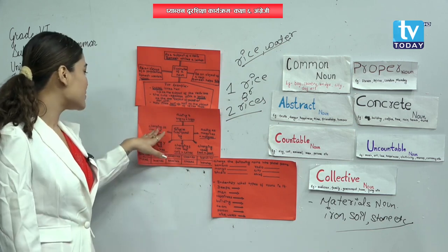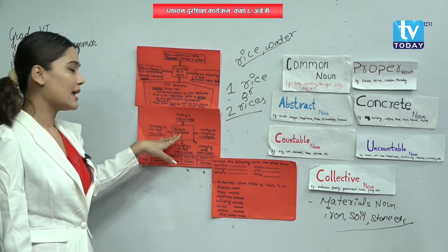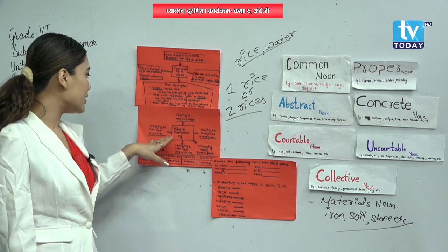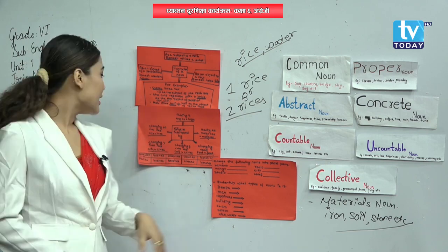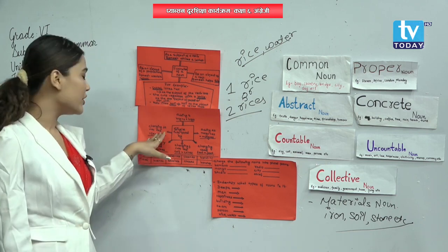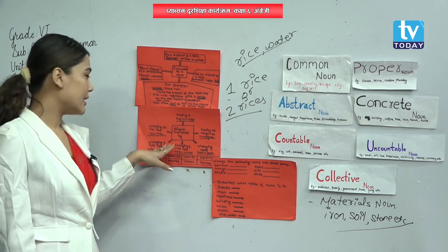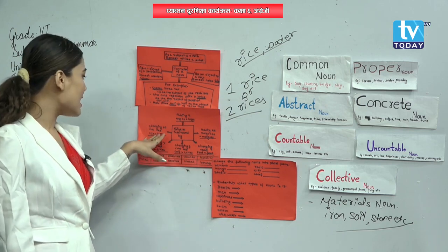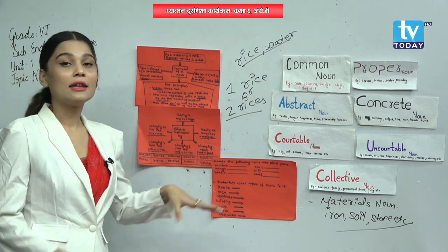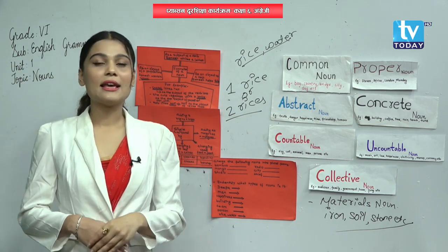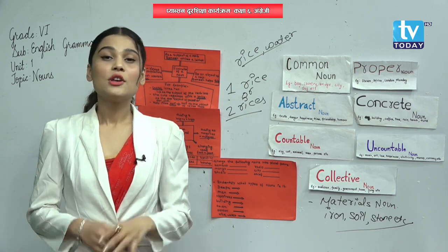Changing 'fe' into 'ves': life is a singular noun. If we add 'ves' here, then it becomes a plural noun — l-i-v-e-s, lives. Are you clear, my dear students?